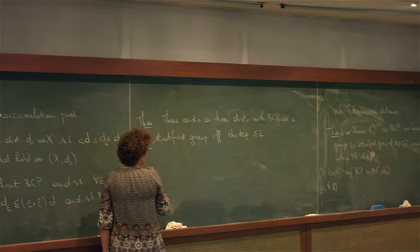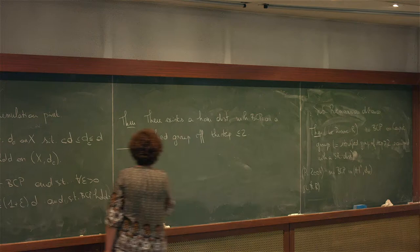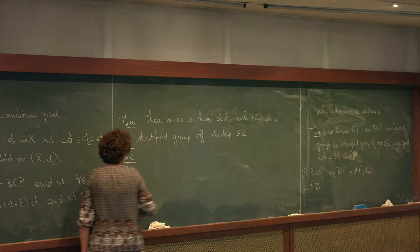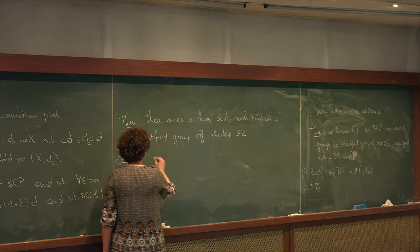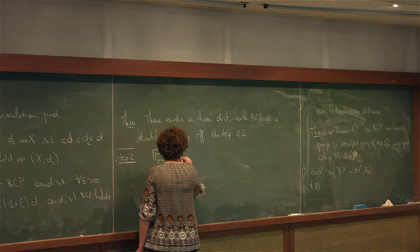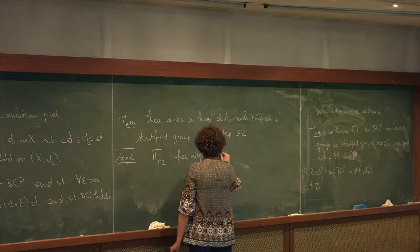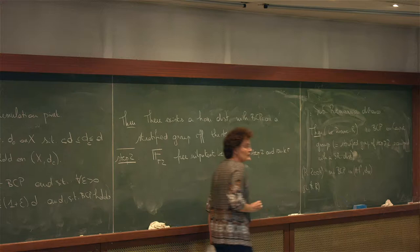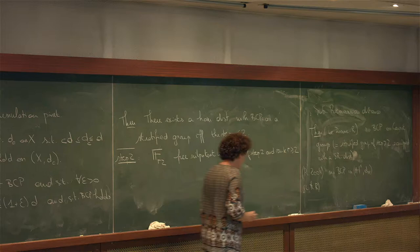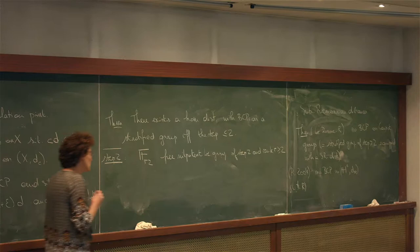My plan is to give a hint of the proof — specifically for step-two stratified groups. The main geometric case to understand is the case of FR_2, which is the free nilpotent d-group of step two. I will give you a precise formula for the good distances — the ones with BCP. So I need to introduce some terminology.